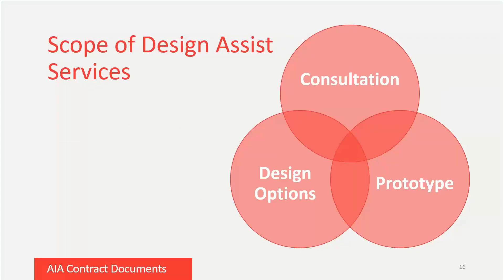In our hypothetical, the consultant is going to provide three types of design assist services. First, it will consult with the owner, design team, and CM to understand the concept and aesthetics of what the owner wants in a facade. Then, once it has that information, it will prepare two or three different design options for the team to choose from, with follow-up consultation and meetings. Finally, once the owner chooses its preferred option, the consultant will do spatial coordination, 3D modeling, and prepare a full-scale prototype, which will help the CM and design team understand how the facade will work in the field and ensure coordination among trades.